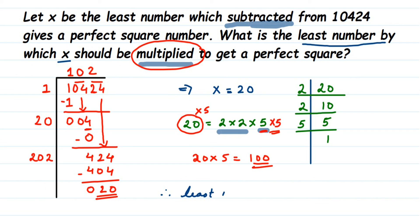So the least number to be multiplied is 5. I hope this question is clear. Thank you Vishnu for asking — this is a really important and different type of question. If you have any doubts, drop a comment. Thank you so much for watching.